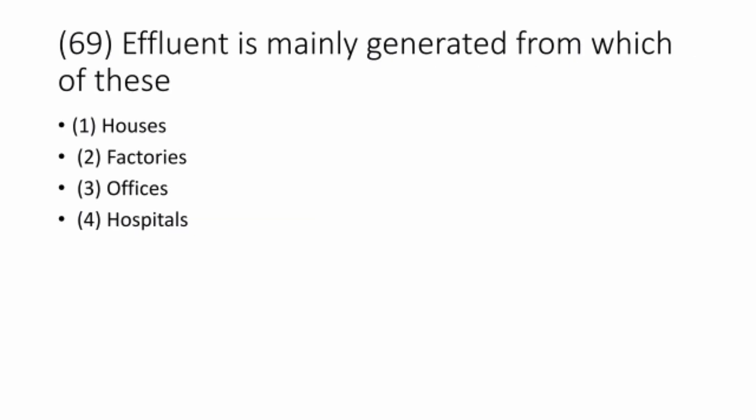Question 69. Wastewater effluent is mainly generated from houses. The correct option is option 1: houses.